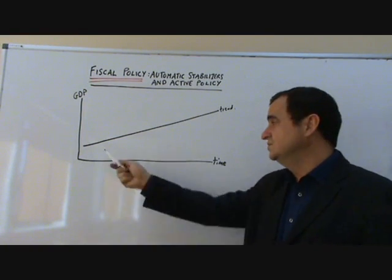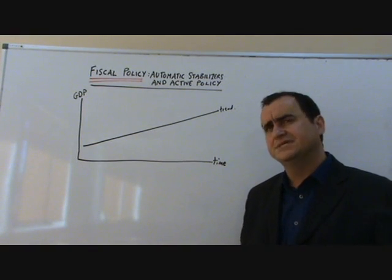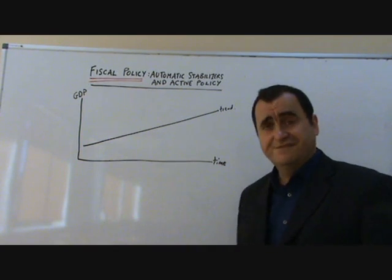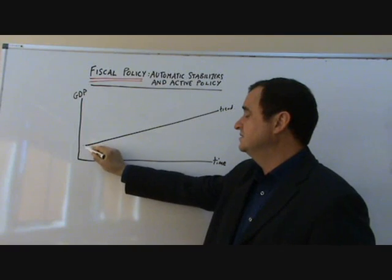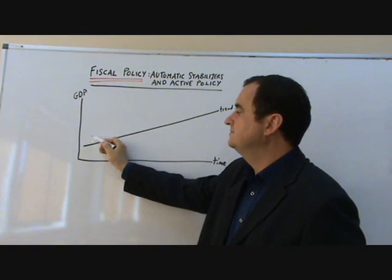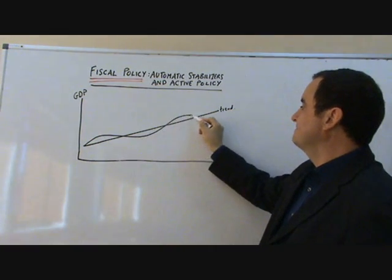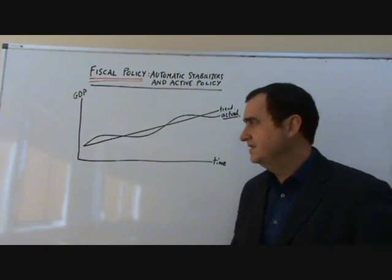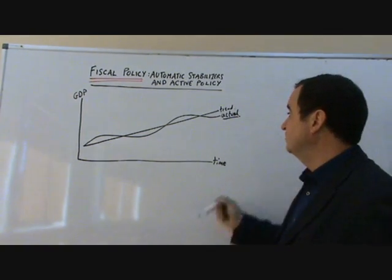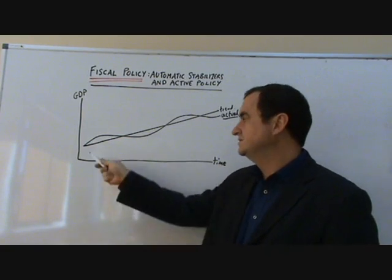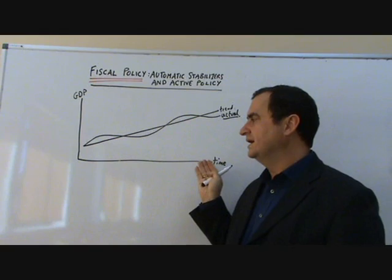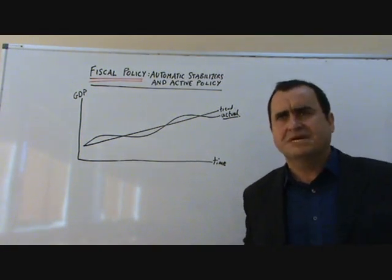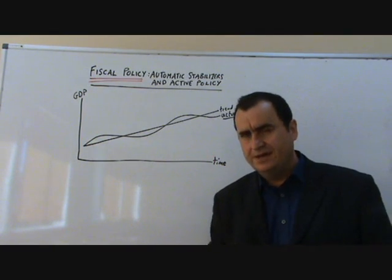But the fact is that it isn't a smooth growth as I've drawn it. There are ups and downs — booms and recessions. If left to market forces, we might see growth not so smooth, but something like this. I'm going to call this the actual growth rate. Does it matter? After all, if they get to the same point in the end, does it matter whether there were different rates of growth along the way? Is it better to have smooth growth?